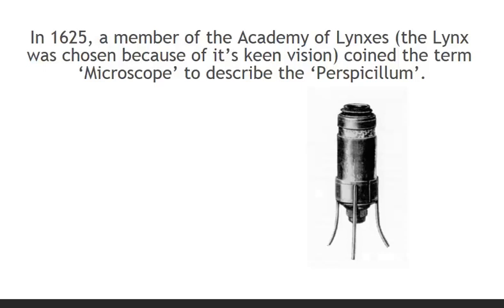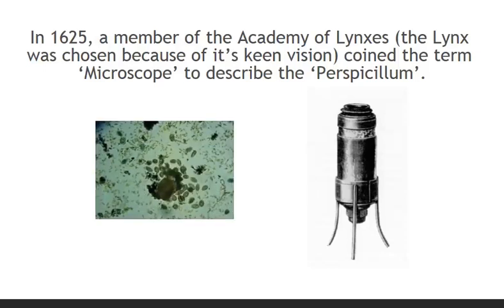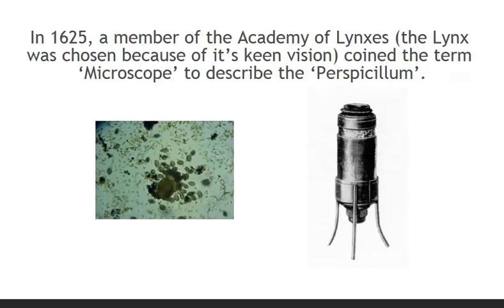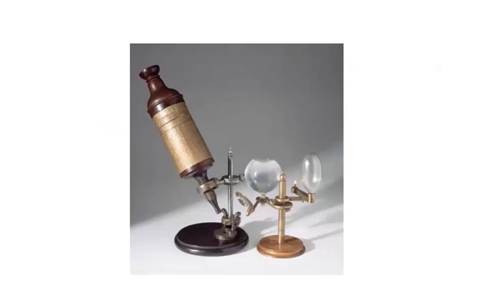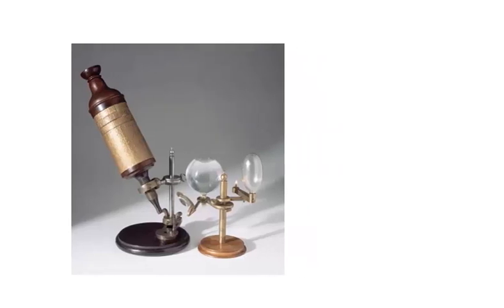In 1625, a member of the Academy of Lynxes — the lynx was chosen because of its keen vision — coined the term microscope to describe the perspicillum. Protozoa in a drop of pond water amazed and perhaps terrified the early microscopists. Seeing abundant life where there was thought to be none had to be eye-opening. Robert Hooke used a mounted barrel-type microscope similar to this one. The globe on the right is known as a Schuster Kugel and was filled with water, performing the function of the modern-day condenser.